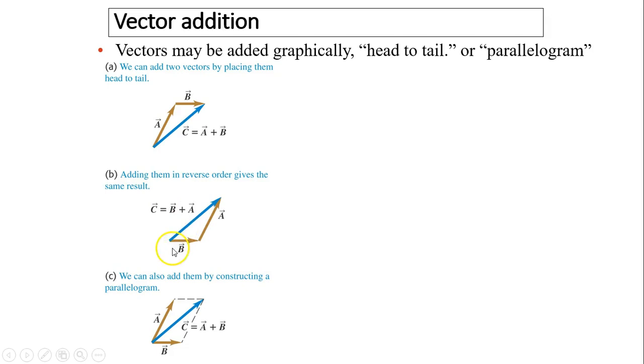So the order doesn't matter. You can use B plus A. You will have the same resultant. We can also add them by constructing a parallelogram. In this case, A and B, we call those concurrent vectors because they are acting at the same point. So this diagonal line for this parallelogram is the resultant.